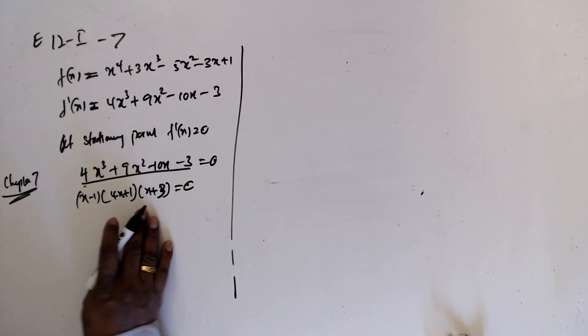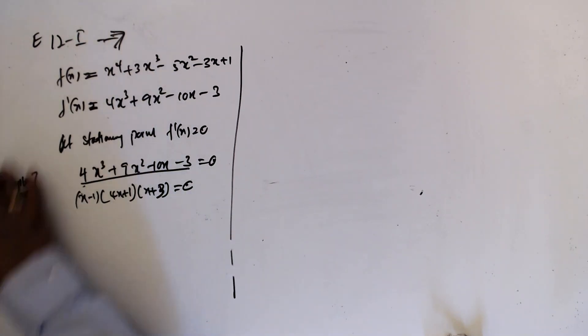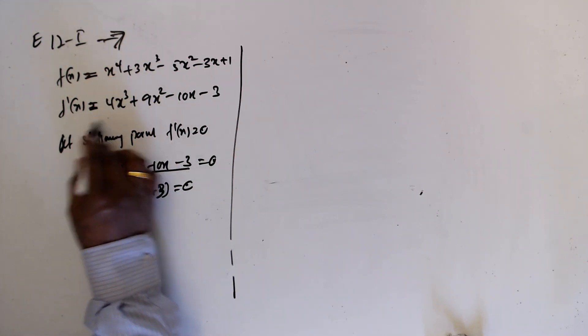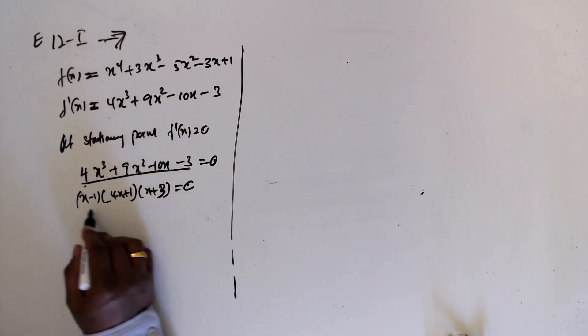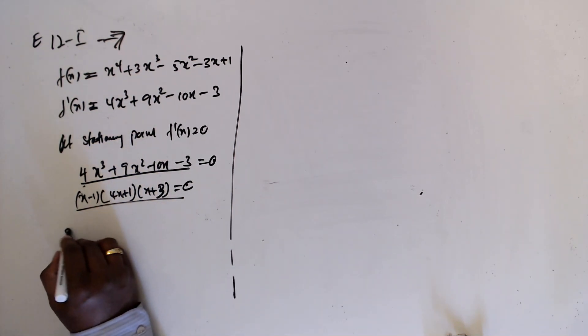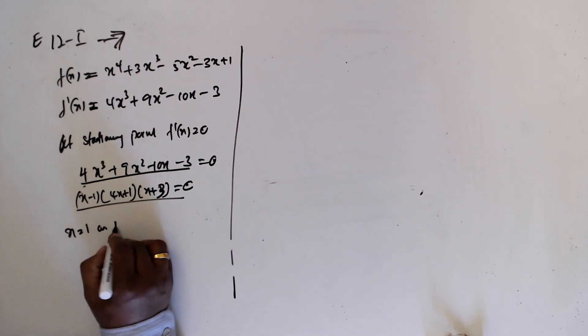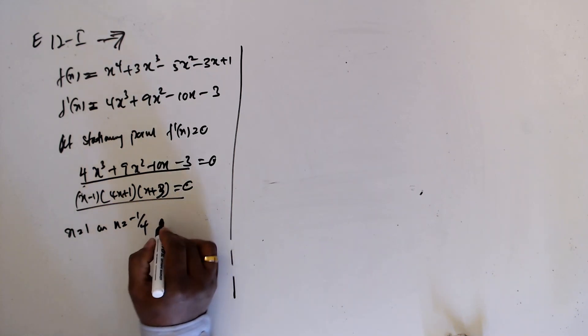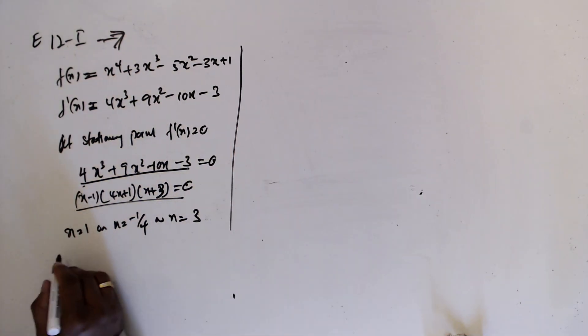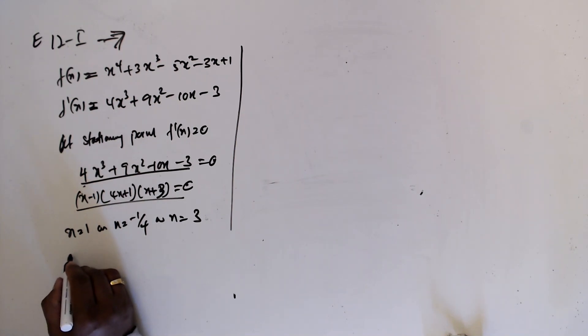Question number 7. So we divide by dx and we factorize this one. Now x equal 1, x equal minus 1/4, x equal 3. Define the coordinates now.